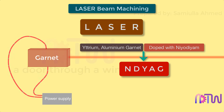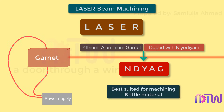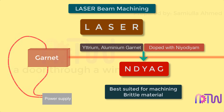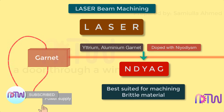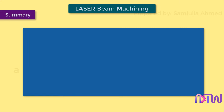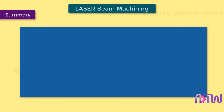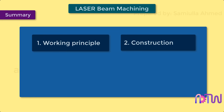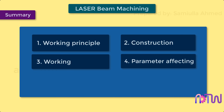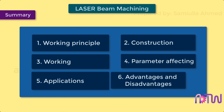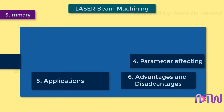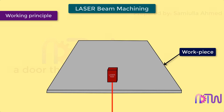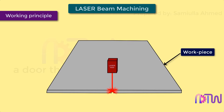Laser beam machining is best suited for machining brittle materials with low conductivity, but can be used on almost every material. This video will cover the following about the laser beam machining process: working principle, construction, working, parameters affecting the machining process, applications, and advantages and disadvantages.